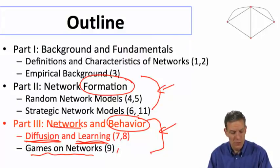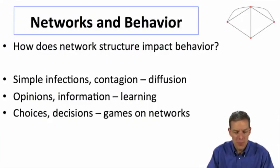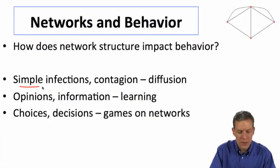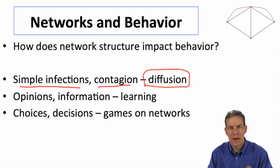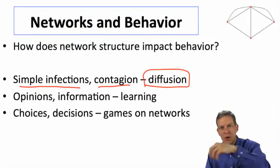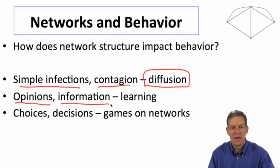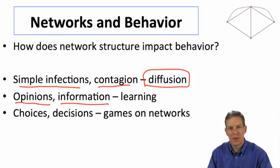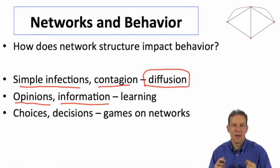Now into diffusion. When we think about how network structure impacts behavior, we'll start with the idea that some things — like simple infections and contagions — we can think about in a fairly mechanical way, where it goes from one node to another. When we think about richer settings where opinions are being formed, information is being processed, and there's learning going on, that's more complicated — it's not just a binary state like either having the flu or not.